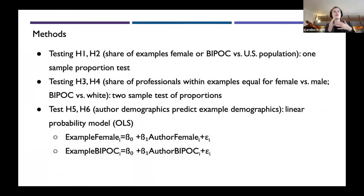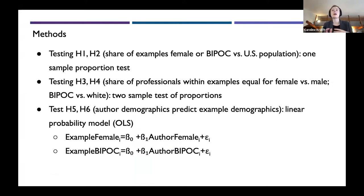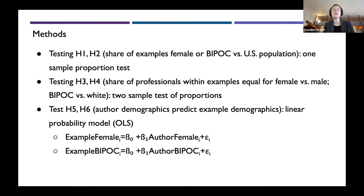Our methods are a straightforward test of these hypotheses. To test the share of examples that are female or BIPOC versus the US population, we use a one-sample proportion test compared to the latest census data. Testing whether the share of professional roles is equal for male versus female or BIPOC versus white, we use a two-sample test of proportions. And to test how author demographics predict example demographics, we run linear probability models where we look at whether example female is predicted by author female, and whether example BIPOC is predicted by author BIPOC.